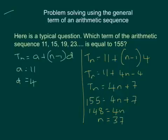So 155 is the 37th term of that particular sequence. Hopefully that helps you with that sort of problem.